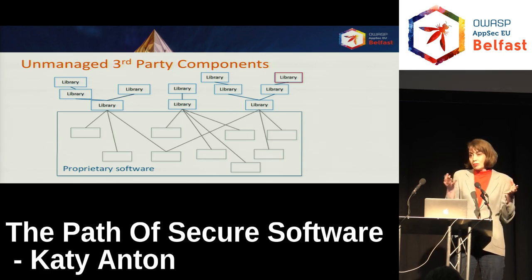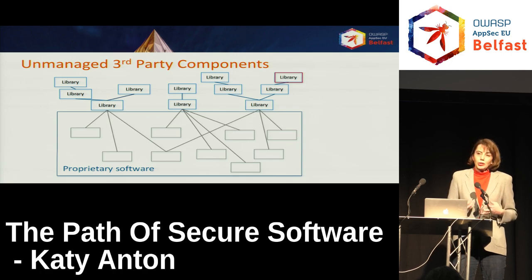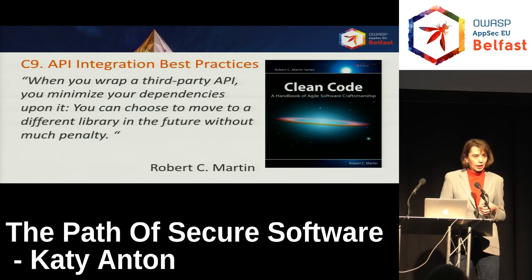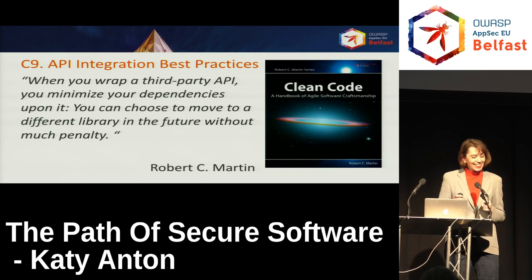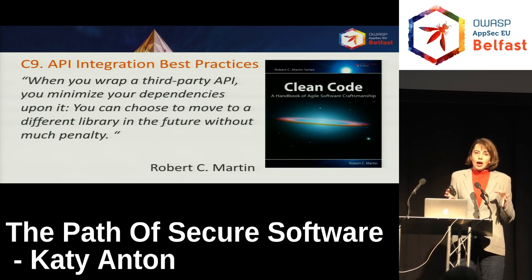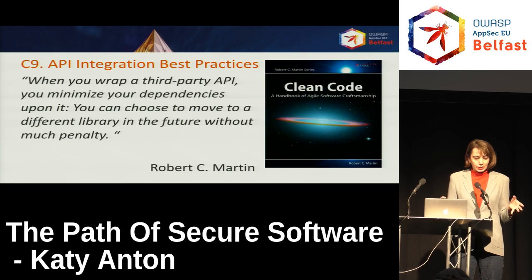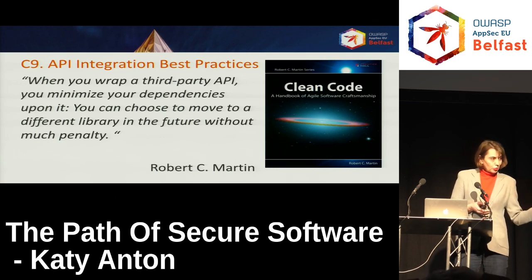So when we bring in third-party libraries, what's the best way to incorporate them? A good starting point is Robert C. Martin's Clean Code. He says that wrapping an API is a best practice because you minimize your dependencies, and if you want to replace it, you can do so without much penalty. There are further benefits from a security point of view — replacing or updating becomes much easier, which is important given the continuous cat-and-mouse chase between developers and attackers.